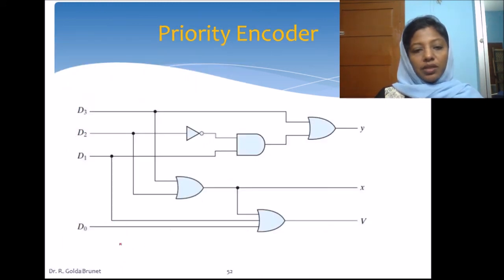We can implement the circuit for the priority encoder. This is the circuit for x because it is going to get d2 or d3, and this is going to be d1 d2 bar or d3, and valid bit is d0, this is d1, and this is d2 or d3. These 2 comes from here. We have the valid bit, so only when the valid bit is 1 we will interpret the result of x and y.